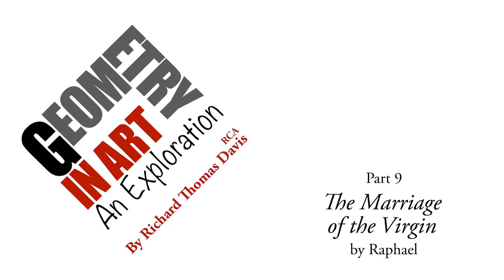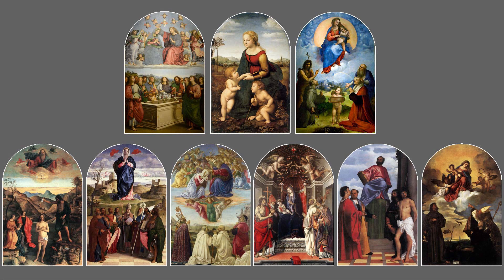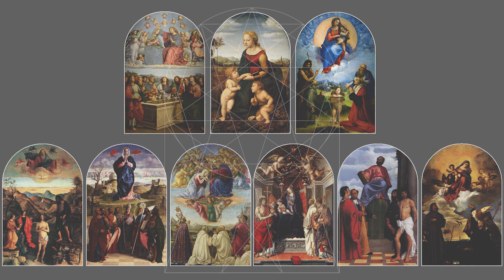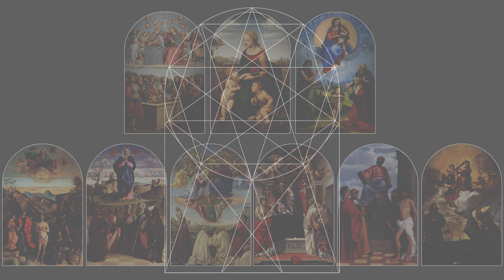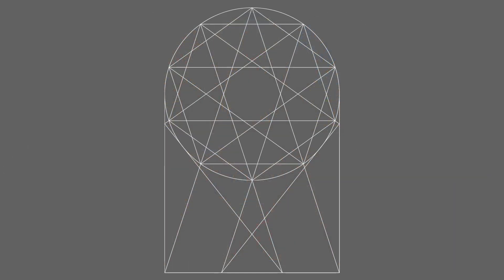Hi everyone, Richard here. In my previous video, Part 8, I showed you these nine Renaissance paintings, including three Raphaels in the top row, that share the same proportions — proportions that align with this geometry.